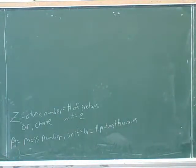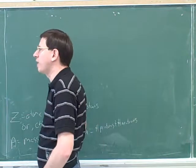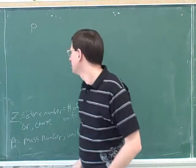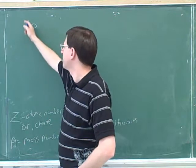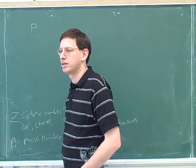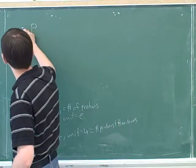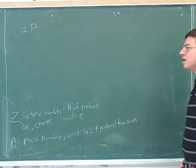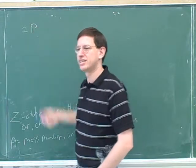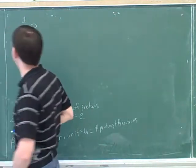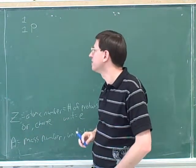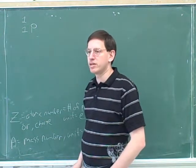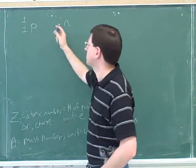Let's talk about some important types of atomic particles. We can start with a proton. We might use lowercase p for proton. Its atomic number would be one and its mass number would be one.